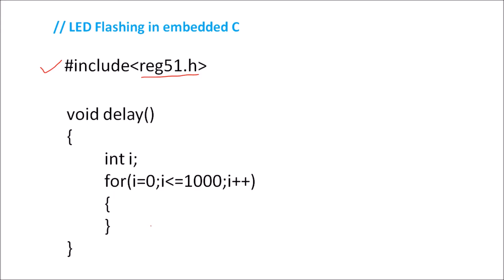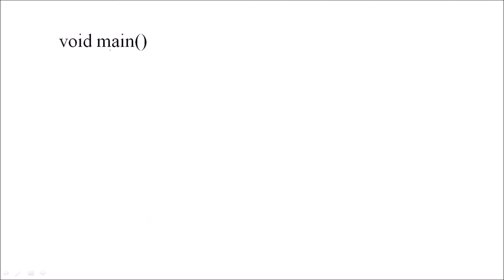This is the delay function which we can call in the main program. Now we will write the main function. It can be declared as void because it is also not returning any value. The program is written inside a while(1) loop. Whatever instructions you write inside while(1) will be executed continuously, so since we want to flash LEDs continuously we write the instructions in the while loop. First, on port P2 we will send 00H.